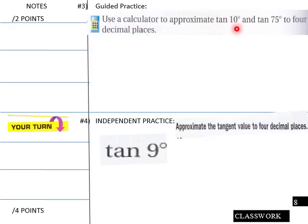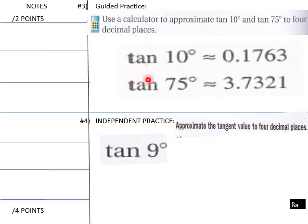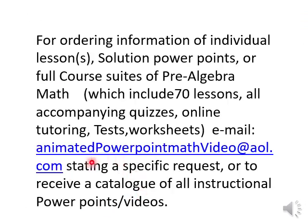Use the calculator to approximate tan 10 and tan 75 to 4 decimal places. Students, this is yours here. Tan 9 degrees. So let's do this one up here first. Tan 10, you should get 0.1763. And then at tan 75, you should get 3.7321. Students, you should get this. If you don't get this, raise your hand. And then down here, this is yours. And that is 9, less than 9.7.